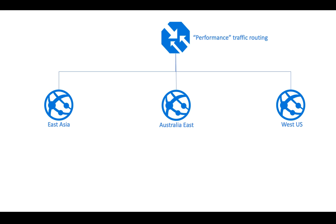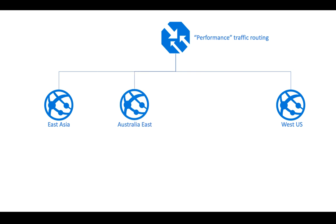But now, as your business grows, you see a lot of clients from Australia and you want to spin up another endpoint there — say, a new web service in Australia Southeast. Australia has two Azure regions, so you might consider just adding that new app service as a fourth endpoint under the same Traffic Manager profile. That would give you East Asia, Australia East, Australia Southeast, and West US — four endpoints, with traffic redirected based on client location and performance.